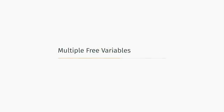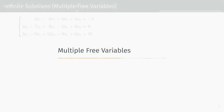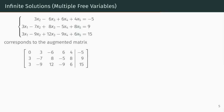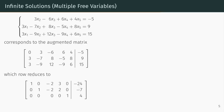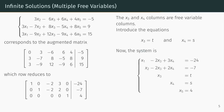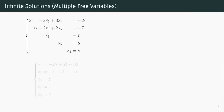Let's look at a more complicated situation involving multiple free variables. Consider the 5-variable system of equations, its corresponding augmented matrix, and the row-reduced form of that augmented matrix. The row-reduced matrix has two free variable columns corresponding to the variables x3 and x4. So we will introduce two arbitrary equations, x3 equals t and x4 equals s, which gives us a new system of equations. We can solve this new system for the variables x1 through x5 in terms of t and s, and we can write this in vector form.